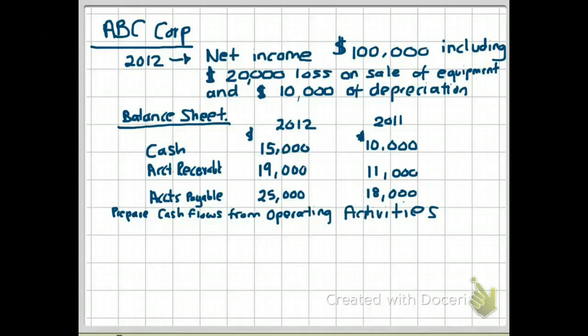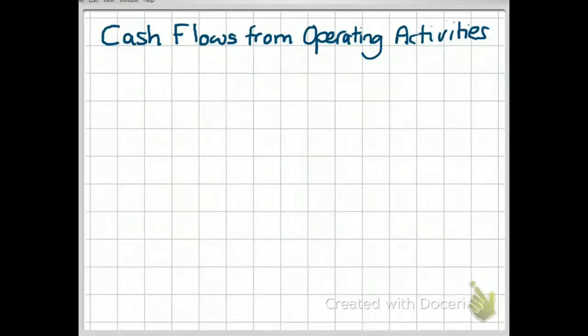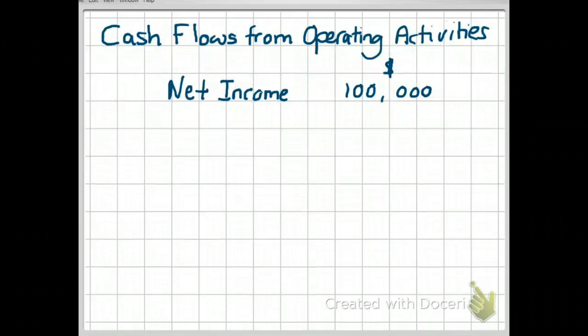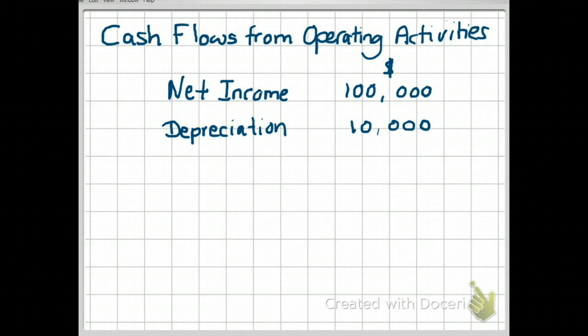When using the indirect method, the first step is to put your net income down. We know our net income is $100,000, so let's go ahead and do that. Next, we look for depreciation. We know that depreciation is $10,000, so we put down $10,000 and add it back, because it was subtracted when we calculated our net income.